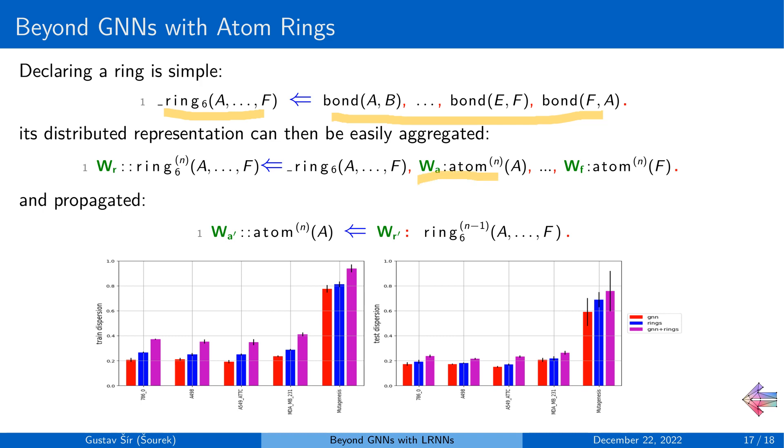while aggregating the representations of the contained atoms into the rings, and then you propagate the representation from the ring back into the individual atoms. And we did find this concept to improve models, basic GNN models, while learning with the molecules a little bit.